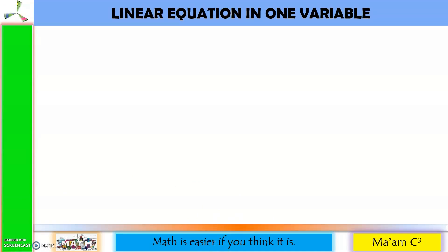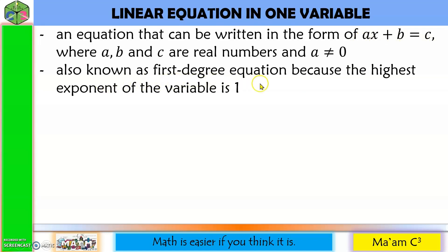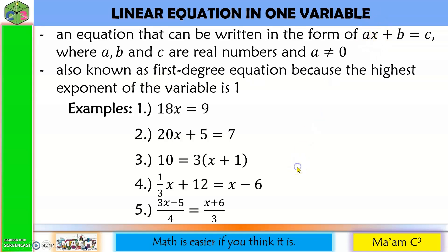A linear equation in one variable is an equation that can be written in the form ax + b = c, where a, b, and c are real numbers and a ≠ 0. It is also known as a first-degree equation because the highest exponent of the variable is 1. In the examples, the exponent of x is an invisible 1.